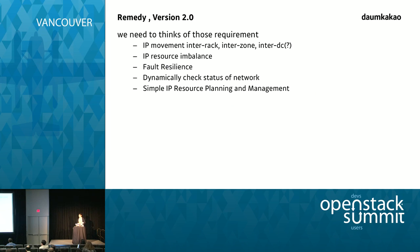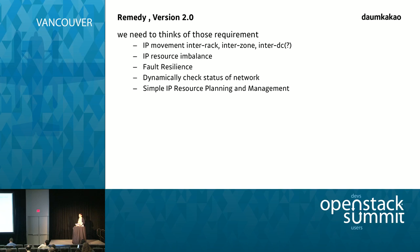But even though we can solve the connectivity problem with overlay networks, we still have to think about subnets, gateways, and broadcasts. So we need to think about a Neutron version 2.0 with new requirements: IP should be able to move across racks and zones so that resource imbalances can be solved by migration without changing the IP. The new system should also have port resilience, dynamic network status checking, and — most importantly for us — simple IP resource planning and management. Every time we set up VLANs, gateways, and routers, it's not good for us given how rapidly we grow.